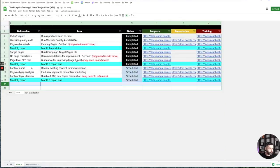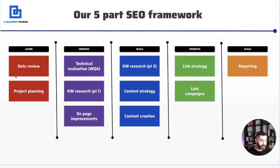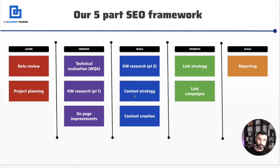In month three, we're starting to push into the content portion of the campaign. We've built the project plan, reviewed the data via the Data Studio report, done the website quality audit for technical evaluation, done keyword research part one, and done the on-page improvements. We're already basically halfway through this campaign going into month three. Some of these things could be extended based on the type of website — if it's e-commerce, the improvement stage is going to be pushed way out; if it's a smaller B2B website, this will be done much shorter. The content strategy we're going into now will be more important for B2B companies like an agency, a lawyer, or an insurance company, as opposed to an e-commerce company that really needs to rank those product pages.